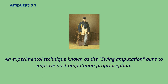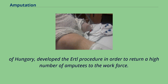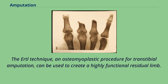An experimental technique known as the Ewing amputation aims to improve post-amputation proprioception. In 1920, Dr. Janos Ertl Sr. of Hungary developed the Ertl procedure in order to return a high number of amputees to the workforce. The Ertl technique, an osteomyoplastic procedure for transtibial amputation, can be used to create a highly functional residual limb.